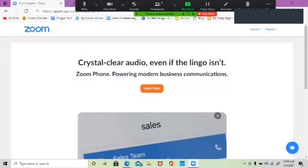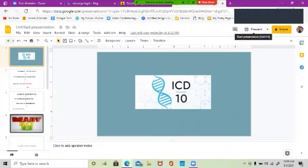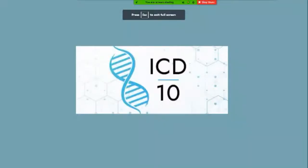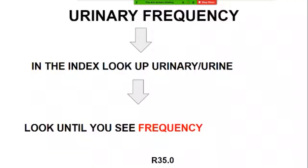We're doing ICD-10. What we're going to look up — it says 'urinary frequency.' I always start with the anatomical site or the body part, so 'urinary.' In your index, which is in the front of your book, look up 'urinary' or 'urine.' Go ahead and get to your index.